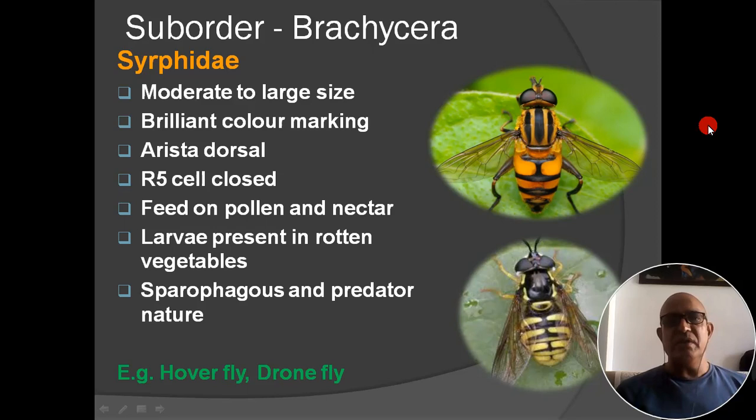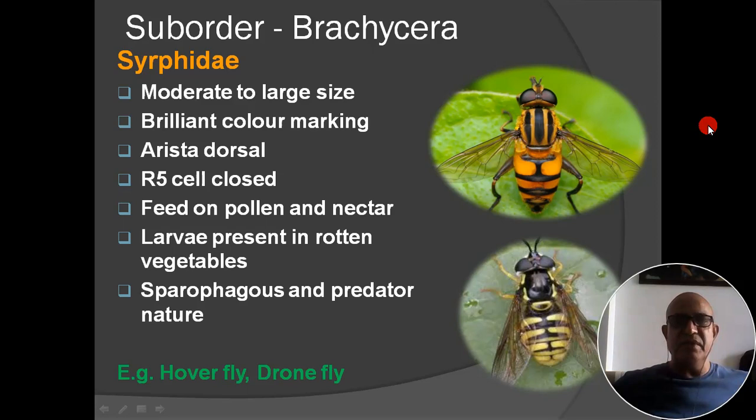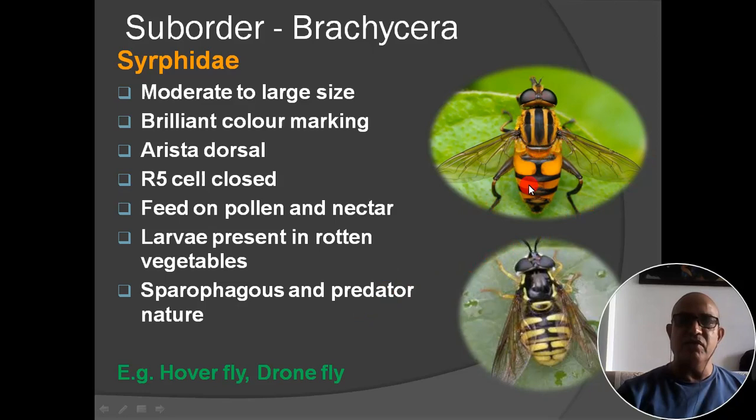Next family: Syrphidae. Insects are moderate to large; brilliant color markings; arista dorsal; R5 cell closed; feed on pollen and nectar; larvae present in rotting vegetables; saprophagous and predator in nature. Example: hover fly and drone fly. This figure shows the hover fly and this is the drone fly.